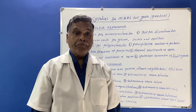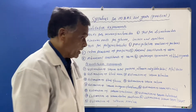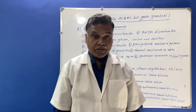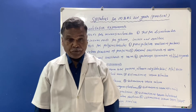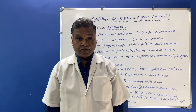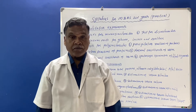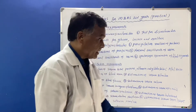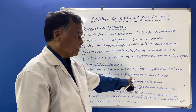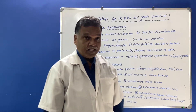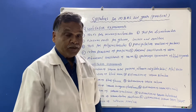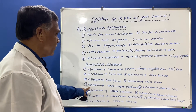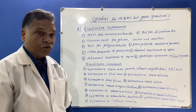The estimation of serum bilirubin: bilirubin is a yellow pigment related to the liver. Its normal range is 0.1 milligram percent to 1.2 milligram percent. The student has to find out the amount of direct bilirubin and indirect bilirubin. Another quantitative experiment is the estimation of serum inorganic phosphorus.